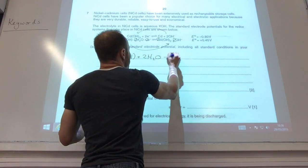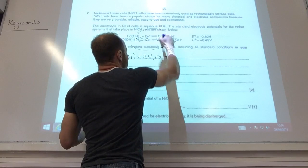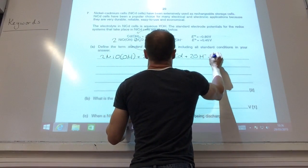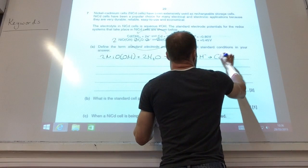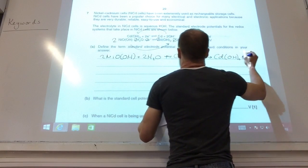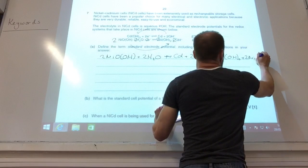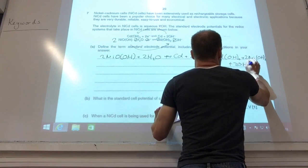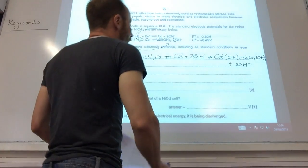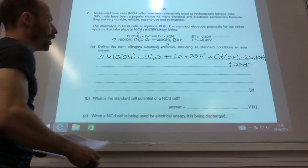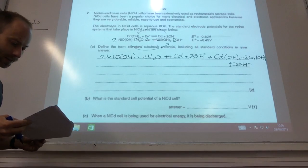2 NiO(OH) plus 2H2O plus cadmium plus 2OH- is going to go to cadmium hydroxide plus 2 nickel hydroxide plus 2OH-. And it looks like I can cancel out those two OH- like so.